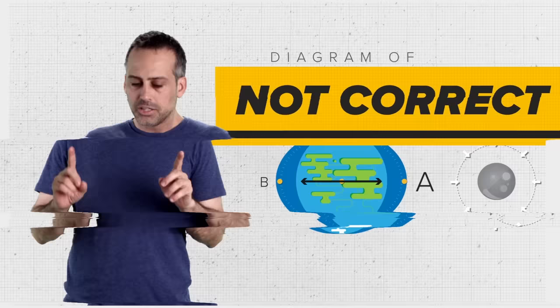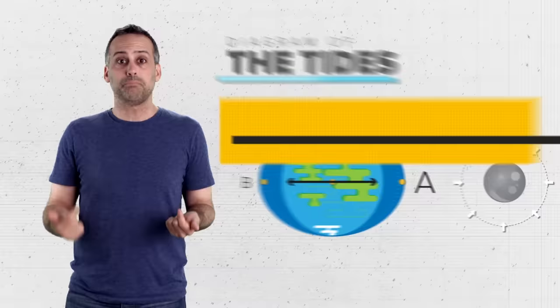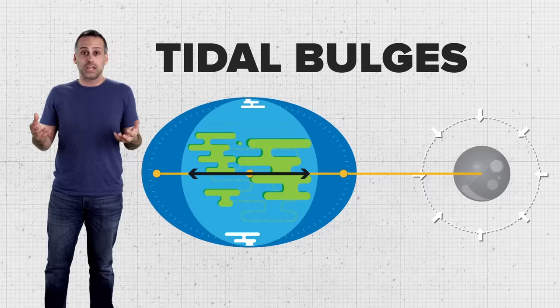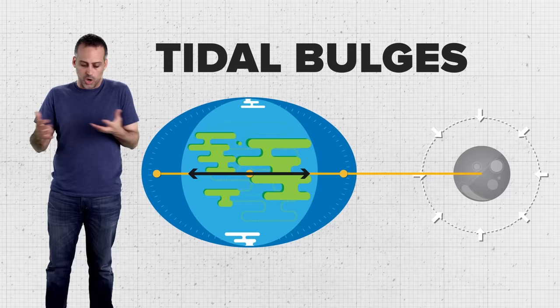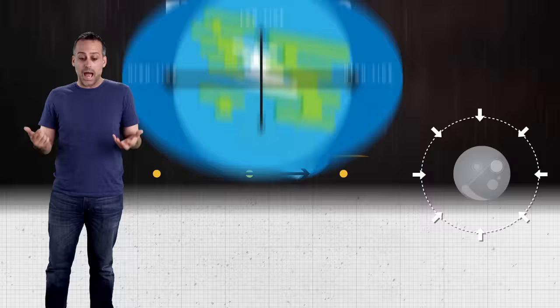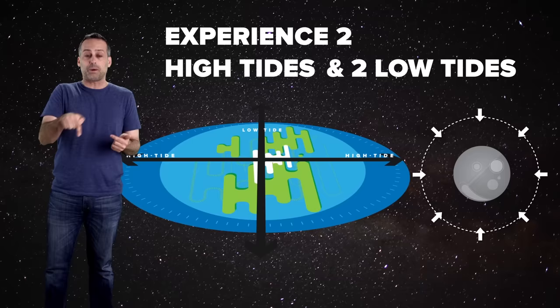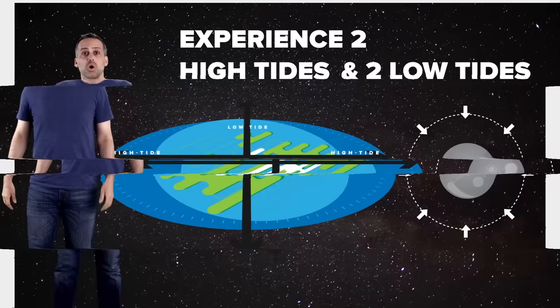Now, that explanation sounds plausible, and a lot of well-known scientists give it. But as we'll see, it's not correct. Don't get me wrong. The facts are correct. There really is a gravity differential from the moon at points A and B. And at least in this simplified model, there would be two tidal bulges at opposite ends of the Earth-Moon line.